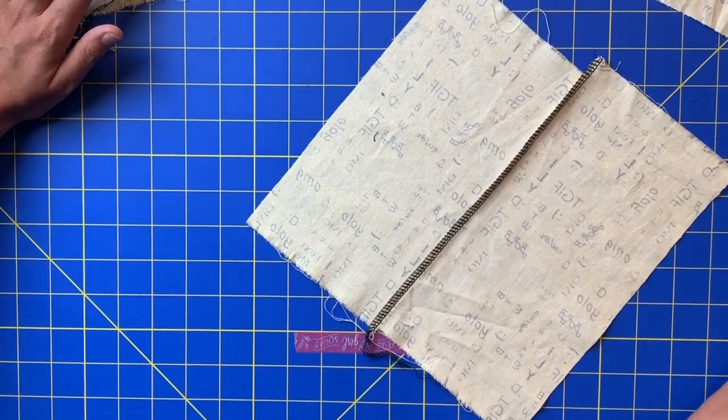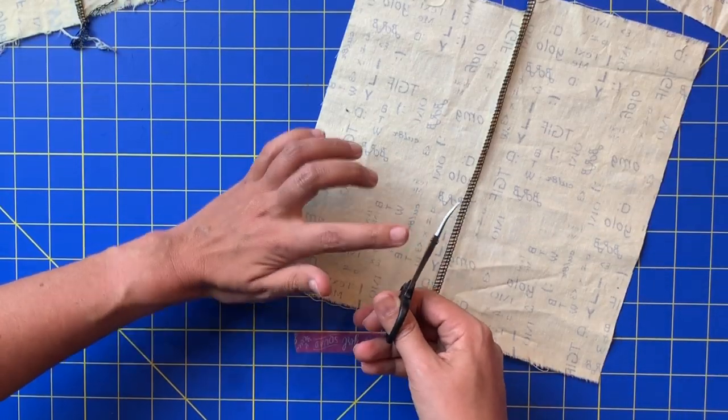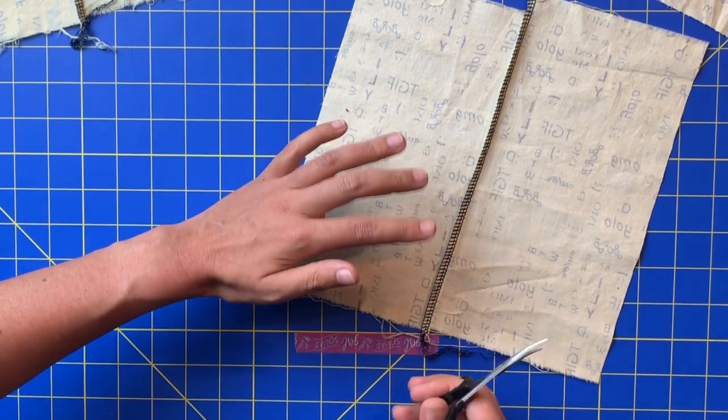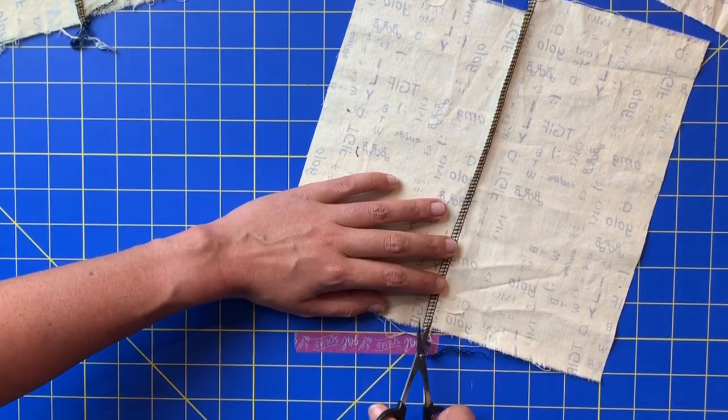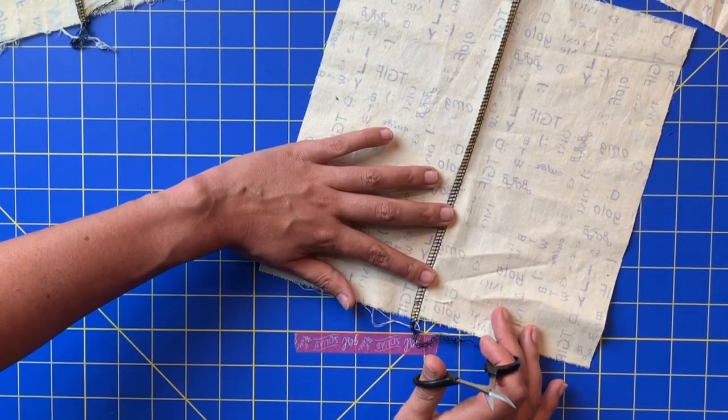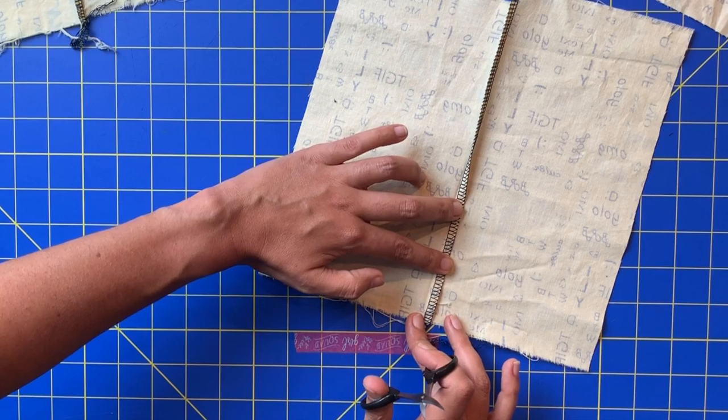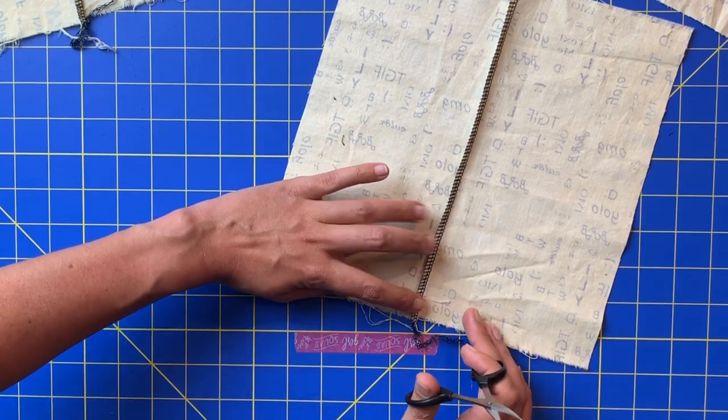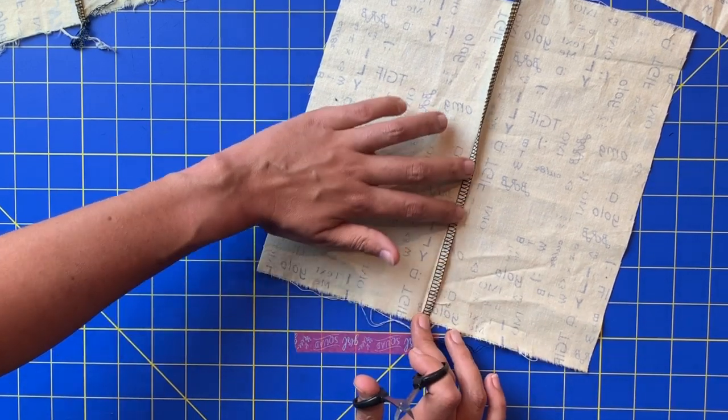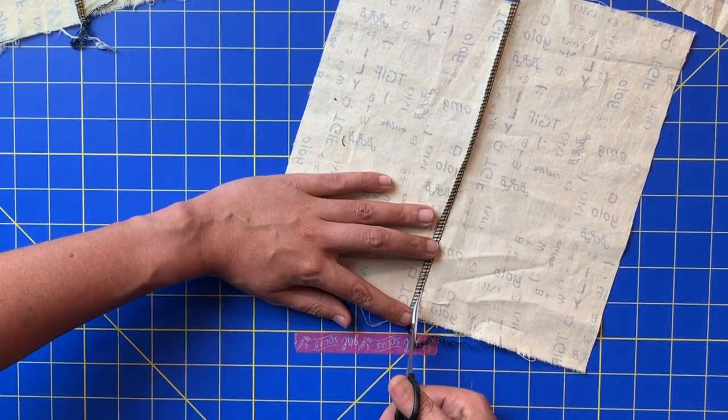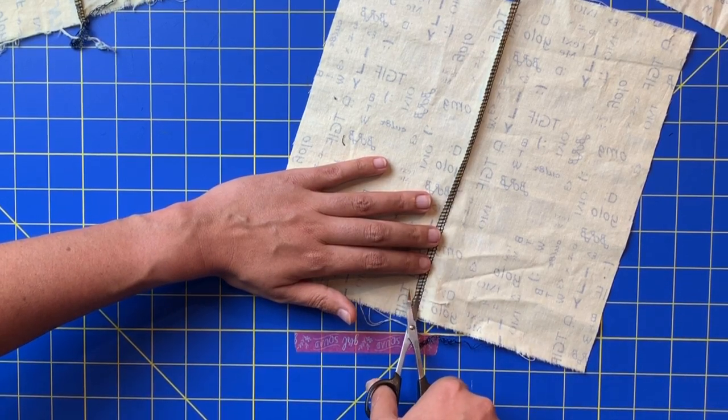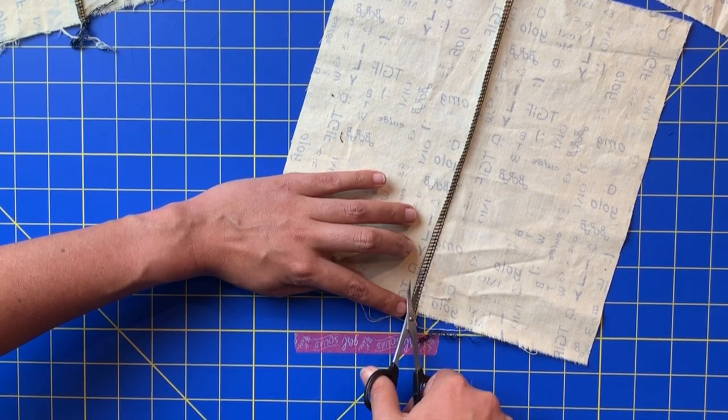You can also take some embroidery scissors I like these with the little curved scissor because you can get in under these threads and you know there is a right side and a wrong side to your serger threads. The right side is the one that has the stitch going on the middle and the wrong side does not. So find the right side slip the embroidery scissor underneath and cut.